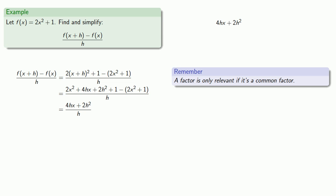And we see that both terms do have a factor of h, so I can move that common factor. So 4hx, I can write that as h times 4x. 2h², I can write that as h times 2h.